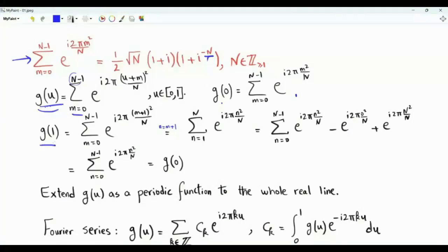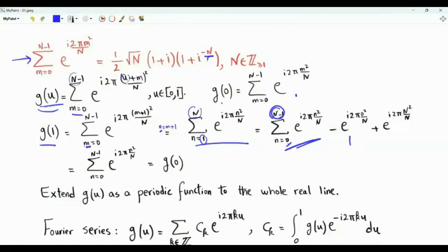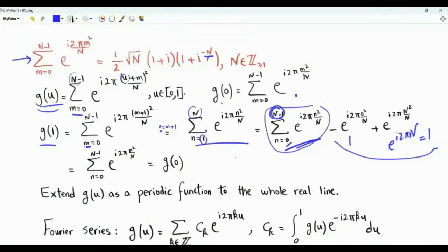Let's check g of 1 by replacing u by 1, and do a change of summation index: let small n equal m plus 1. When small m is 0, small n is 1; when small m is big N minus 1, small n is big N. The summation from 1 to N can be rewritten from 0 to N minus 1 by subtracting the term at 0, which is 1, and adding the term at small n equal to big N, which is e to the i pi times big N — an integer, so that equals 1. Minus 1 plus 1 is 0, so g of 1 equals g of 0.